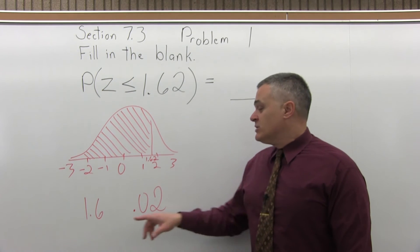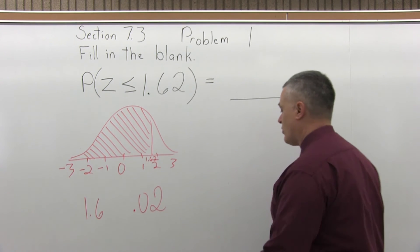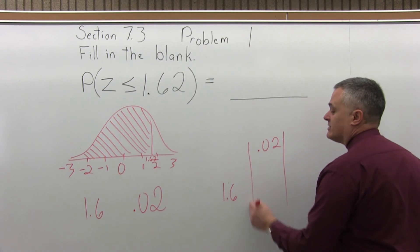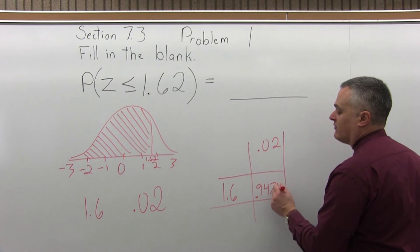And now we go to the chart. We want the positive part of the chart because it's a positive number. We're going to go to the 1.6 row and the 0.02 column and see where they intersect. And they intersect at 0.9474.